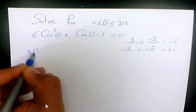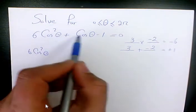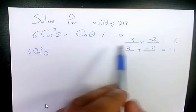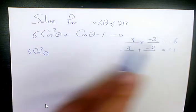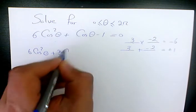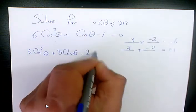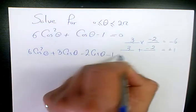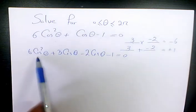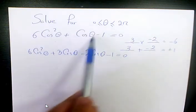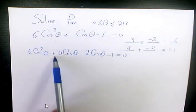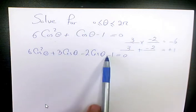So you substitute there. It's going to be 6 cosine squared theta. Instead of cosine theta, I will write 3 cosine theta minus 2 cosine theta. So 3 cosine theta minus 2 cosine theta minus 1 equals 0. Instead of 3 terms, now I have 4 terms. The middle term here changed to 3 cosine theta minus 2 cosine theta.